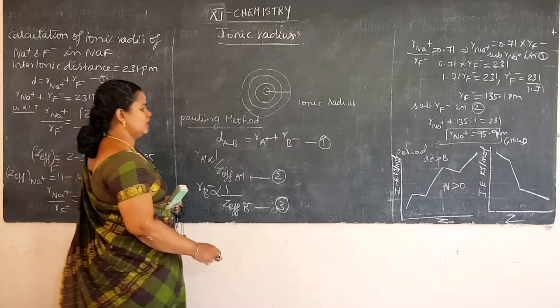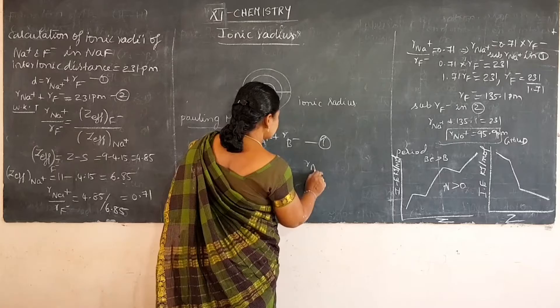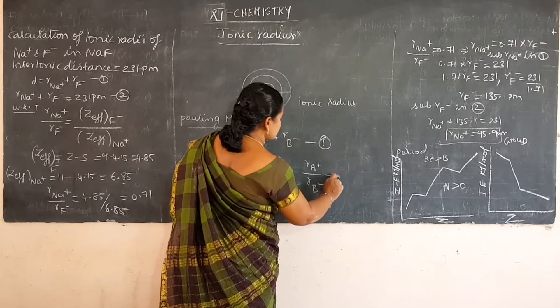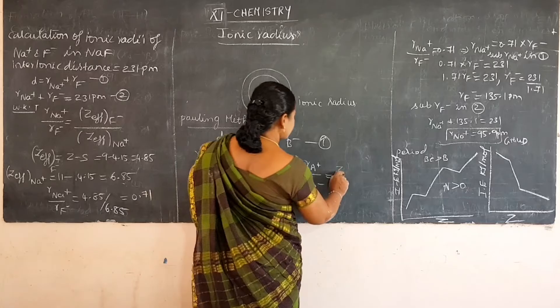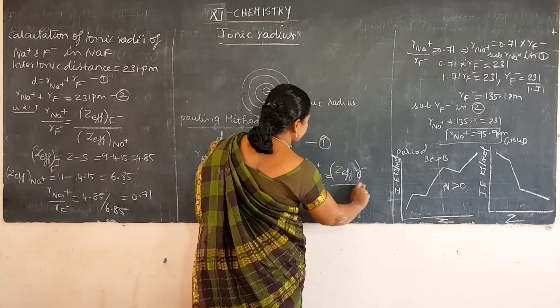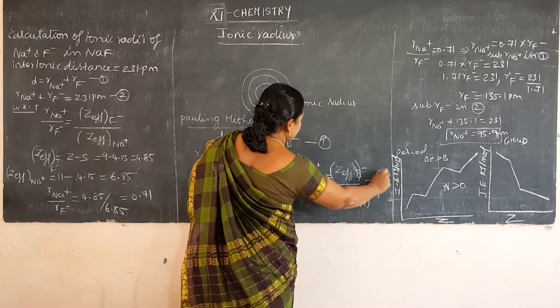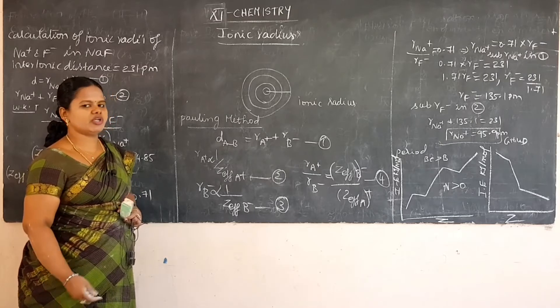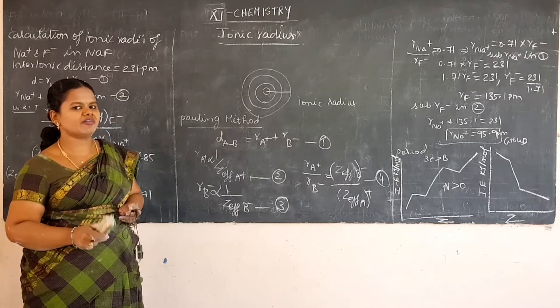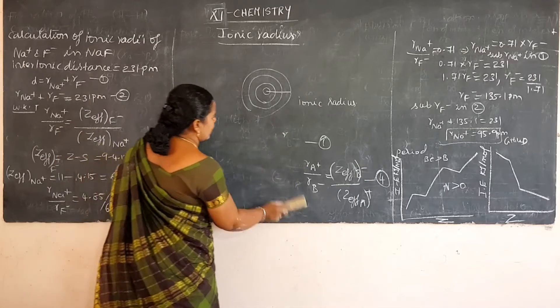Now divide equation 2 by equation 3. Then you will get: r_A+ divided by r_B- is equal to Z_effective(B-) divided by Z_effective(A+). This is the 4th equation. From the 4th equation you can find out r_A+ and r_B-, that is the radius of the cation and the anion. This is the Pauling method to determine ionic radii.